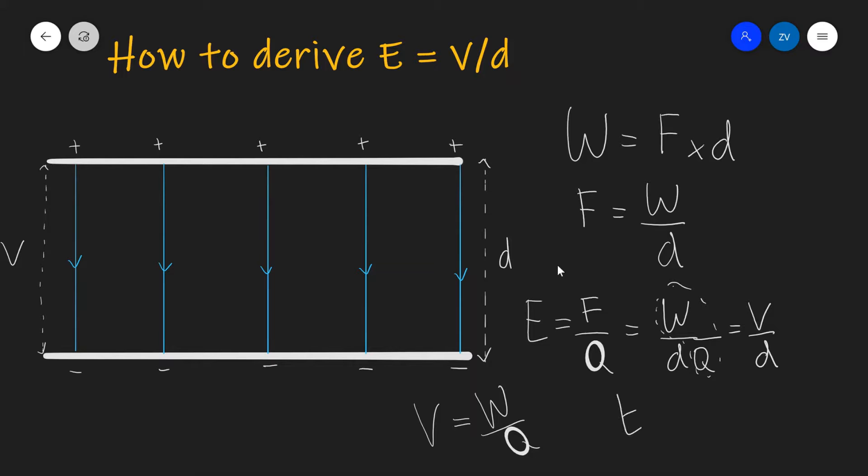And this is how we can quickly derive our expression for the potential difference between two parallel plates. Remember, this equation only applies for a uniform electric field. So we're only going to be using this between parallel plates or if we were approximating locally the electric field as being parallel.